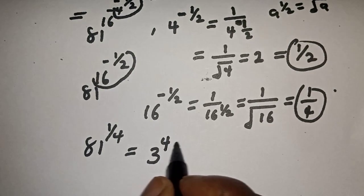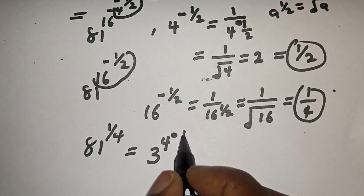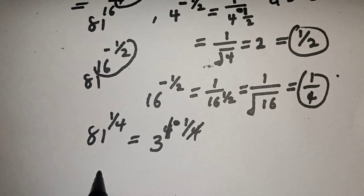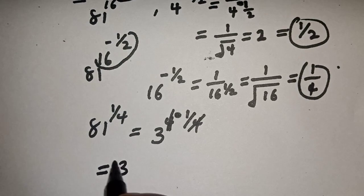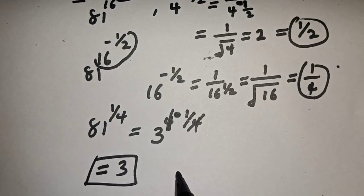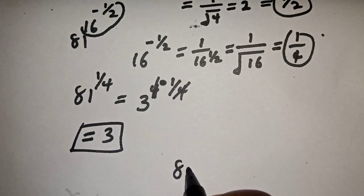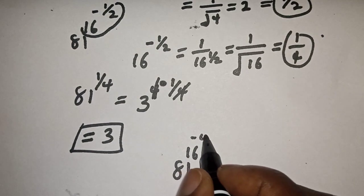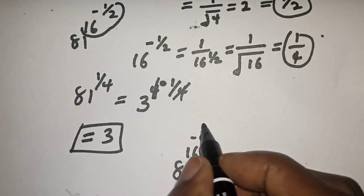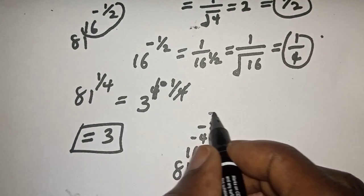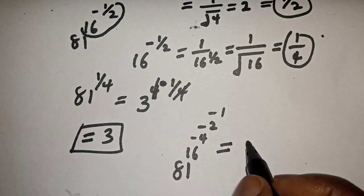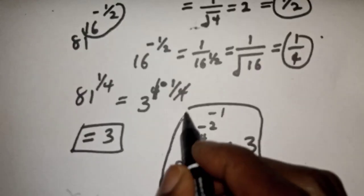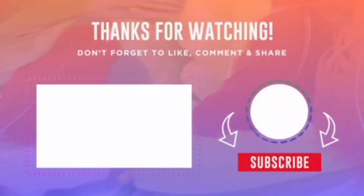81 raised to power 1 over 4 is equal to 3 raised to power 4, multiplied by 1 over 4 — the 4s cancel — and this is equal to 3. This is the final answer. Therefore 81 raised to power 16 raised to power minus 4 raised to power minus 2 raised to power minus 1 is equal to 3. If you enjoyed the class, please don't forget to like, share, comment and subscribe. Thank you.